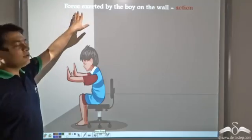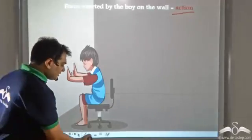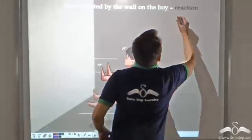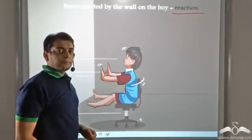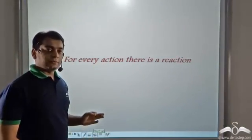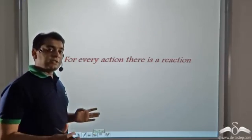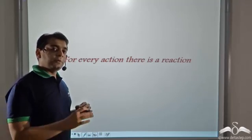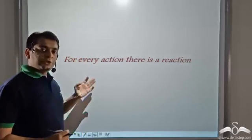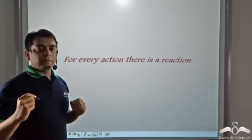Here, the force exerted by the boy on the wall is the action. And since the wall responds by pushing the boy backwards, the force exerted by the wall on the boy is the reaction. For every action, there is a reaction, and the action and reaction are in opposite directions. When the swimmer was pushing the water backwards, the water was pushing the swimmer forwards. When the boy was pushing the wall in the forward direction, the wall was pushing the boy back in the backward direction.